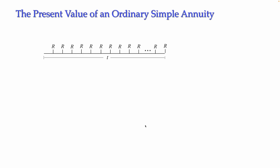Hello students. In this video I will be explaining how to compute the present value of an ordinary simple annuity. The present value will be the value of all the payments you are making in the annuity at the beginning of the term — at the beginning of the first payment interval.